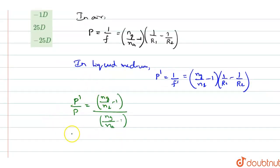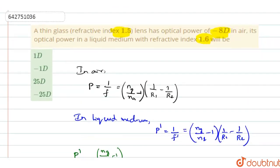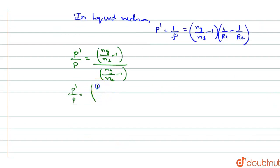In this, we shall keep this P dash by P as it is and substitute only the refractive index values first so that NG is how much? NG they have given it as 1.5. So, I will write it as 1.5 divided by 1.6 minus 1 divided by 1.5 by 1 minus 1. So, this will become, it is like minus 0.1 by 1.6 divided by 0.5.